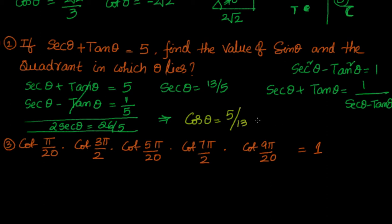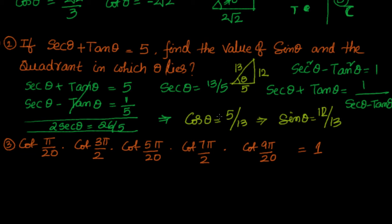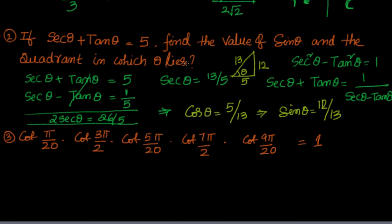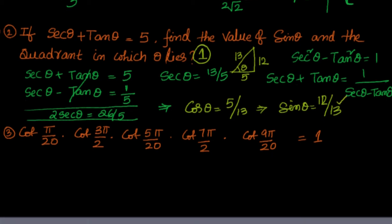Using the Pythagorean theorem on the right angle triangle where cos theta gives adjacent 5 and hypotenuse 13, the opposite side is the square root of 169 minus 25, which is root 144, equal to 12. So sin theta equals 12 by 13. Since both sin and cos are positive, theta lies in the first quadrant.